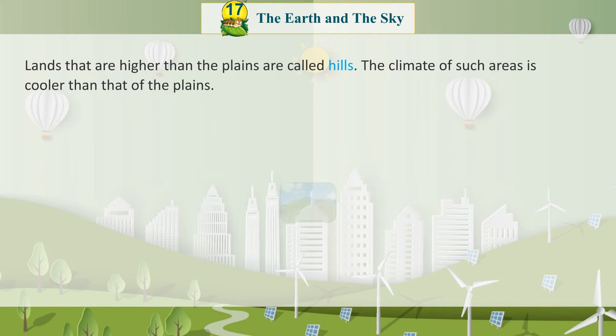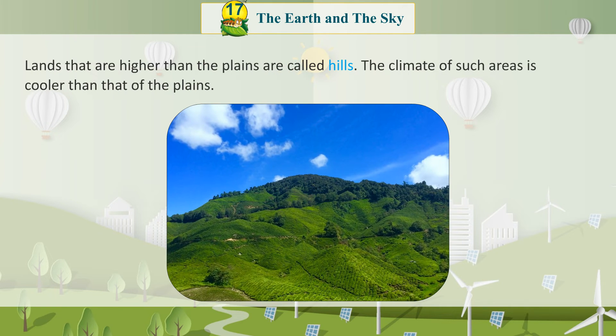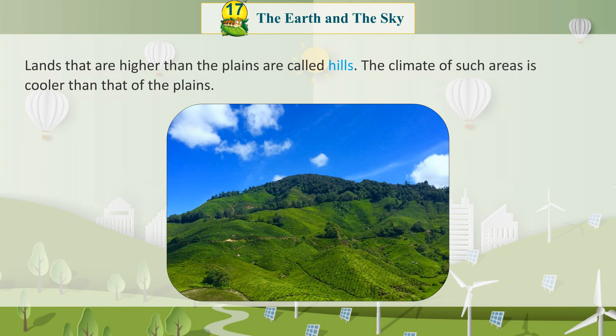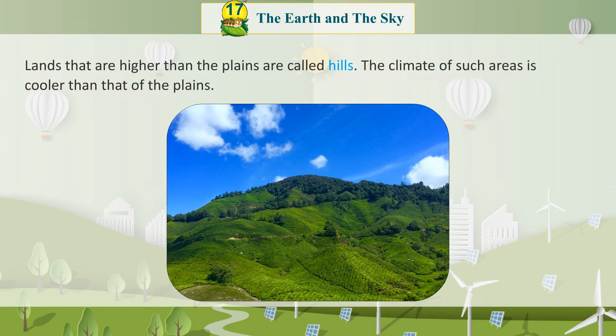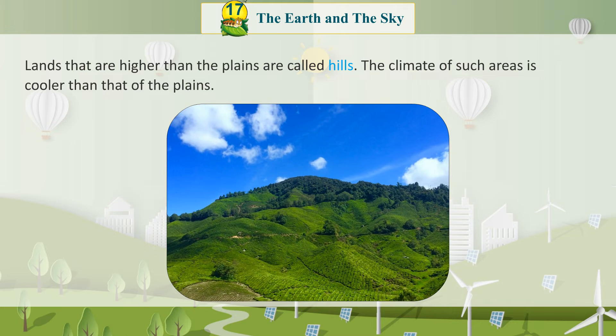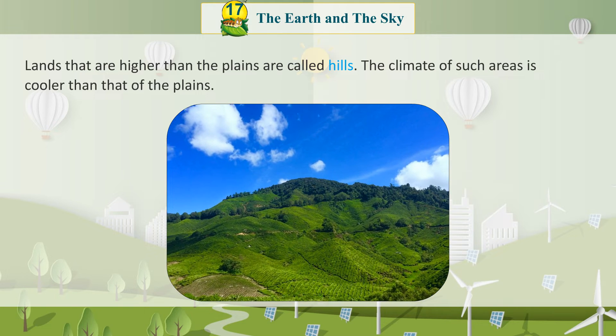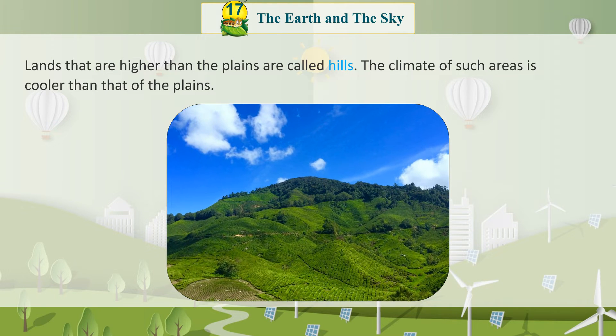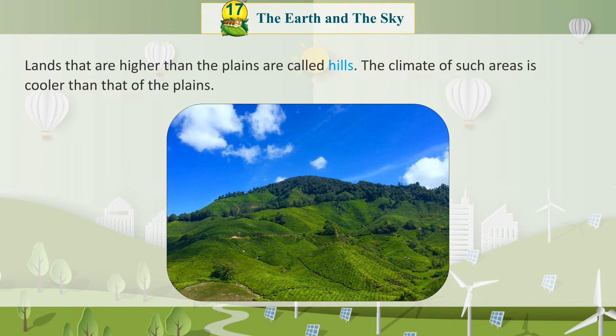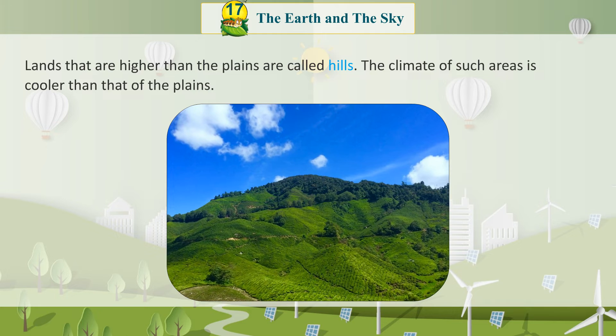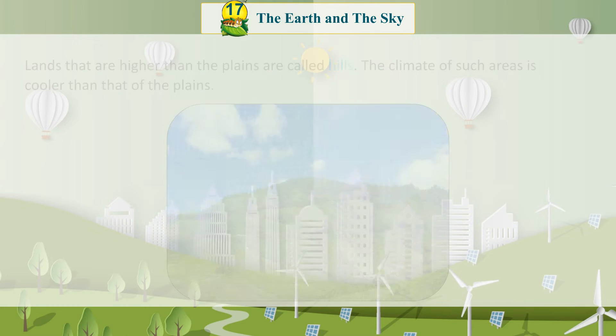Many different kinds of plants grow here and different kinds of animals live here. Hills: Lands that are higher than plains are called hills. The climate of such areas is cooler than that of the plains.